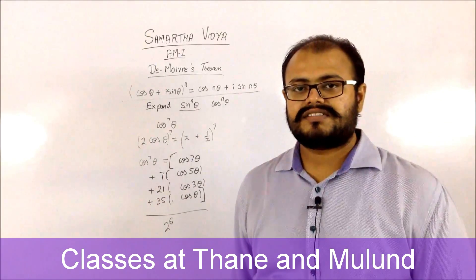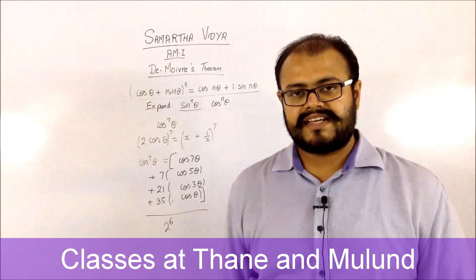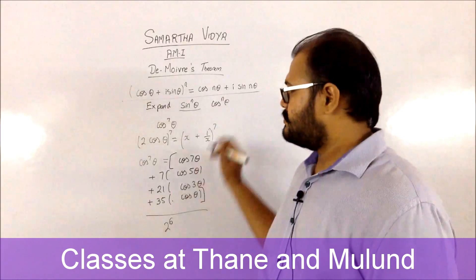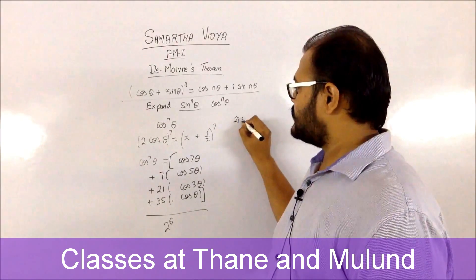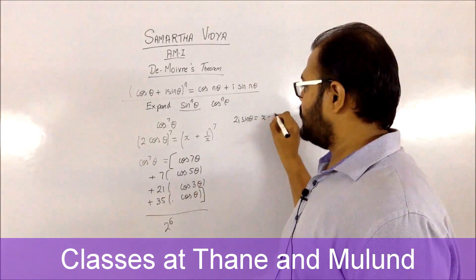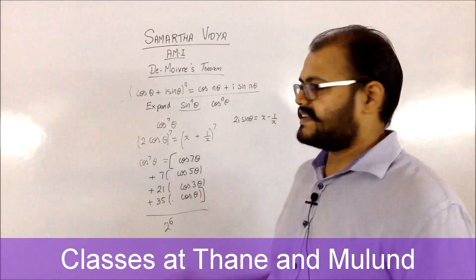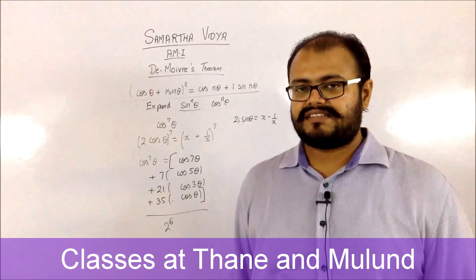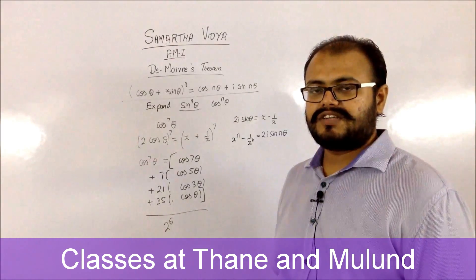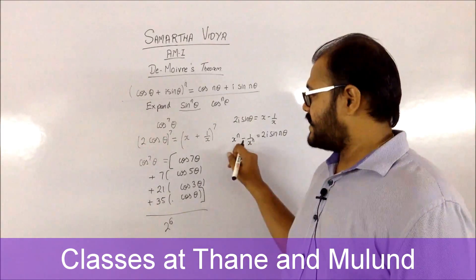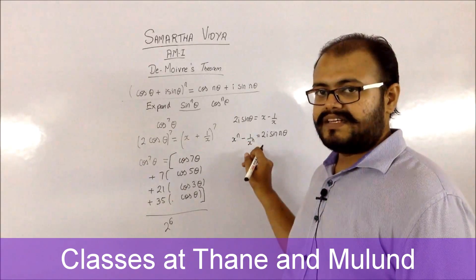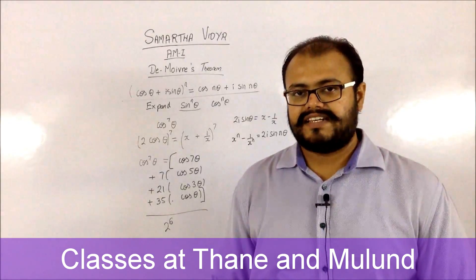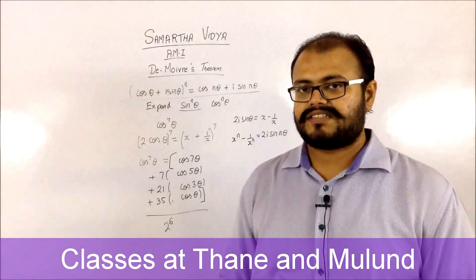Similarly, if sin^7(θ) is asked, take the equation 2i sin θ = x − 1/x and raise it to the 7th power. Apply the binomial expansion and remember that x^n − 1/x^n = 2i sin(nθ) to identify the sine terms in the expansion.